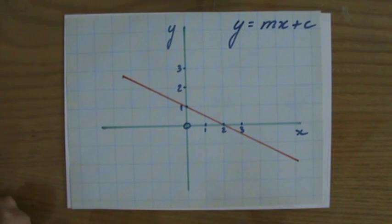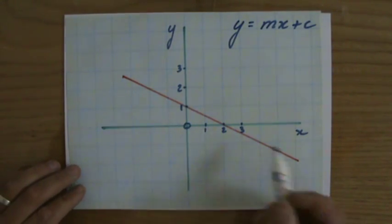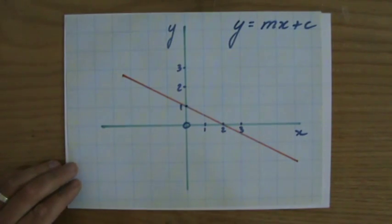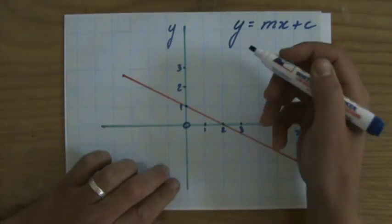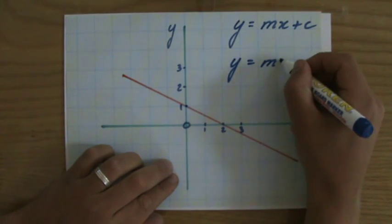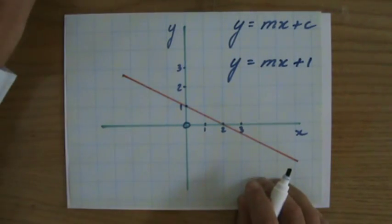Now let's start easy with the y-intercept. At which point on my y-axis does it cross the y-axis? Well, it crosses it over here. So what is that number? That is a 1, isn't it? So I can already write down y equals mx plus 1.